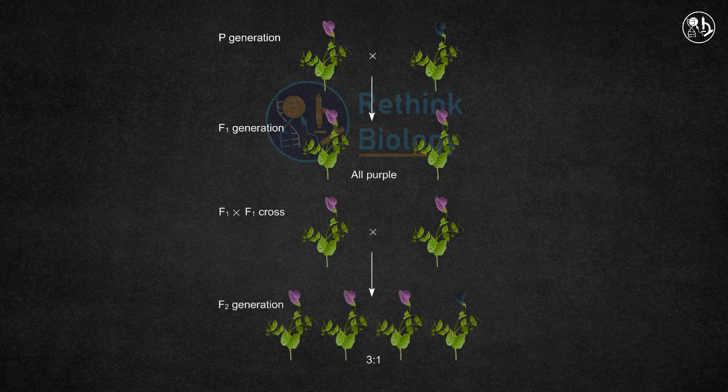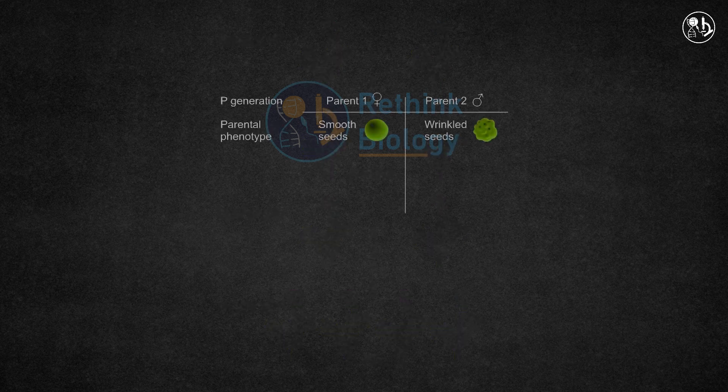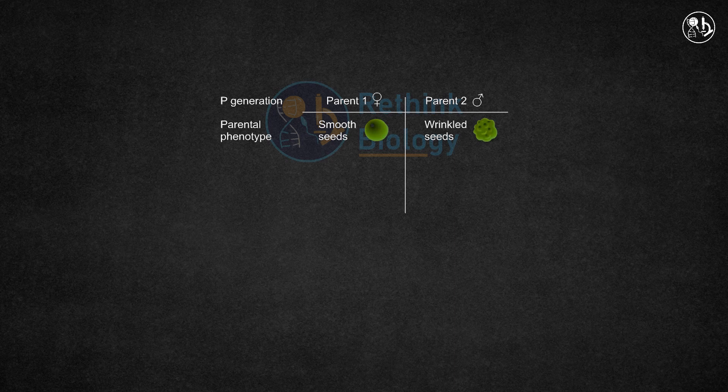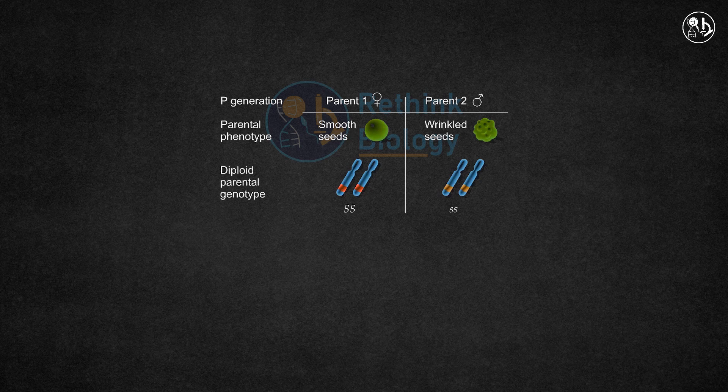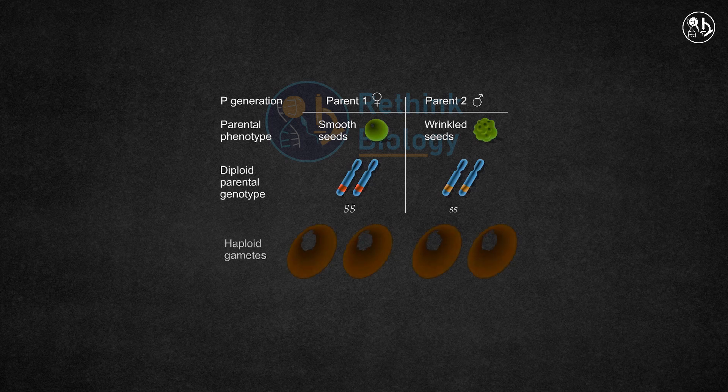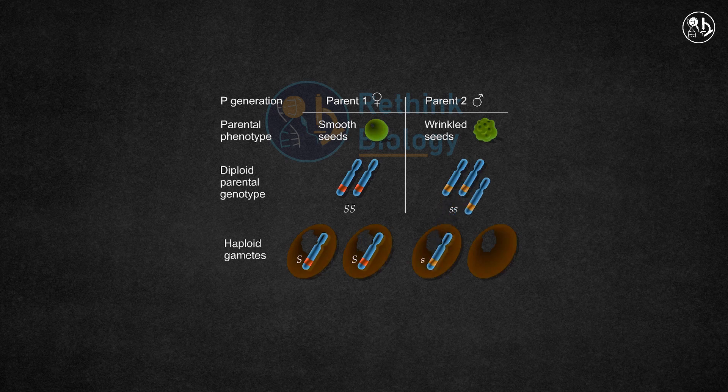Mendel proposed that traits are controlled by factors that occur in pairs and that the parental true breeding plants can be designated as capital S for the smooth seed plant and small s for the wrinkled seed trait. During sex cell production, these factors separate into pollen or ovum and combine in the offspring.